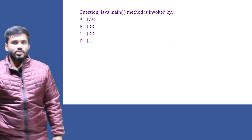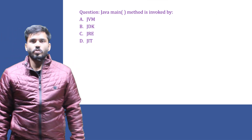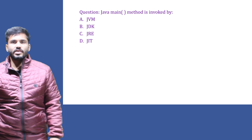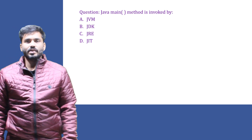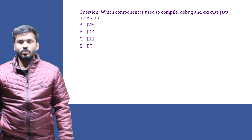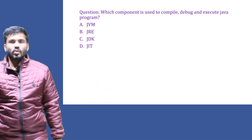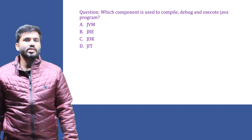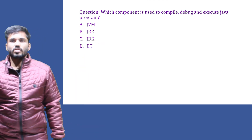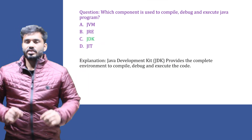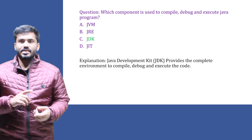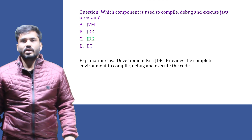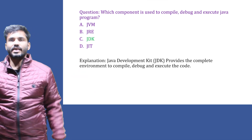Now we'll go through some MCQs. The first question: Java main method is invoked by whom? As we studied, the JVM — Java Virtual Machine — invokes the main method at the beginning of the code. Next question: which component is used to compile, debug, and execute a Java program? JDK — Java Development Kit — has the compiler, debugger, and all development tools necessary, so the answer is JDK.